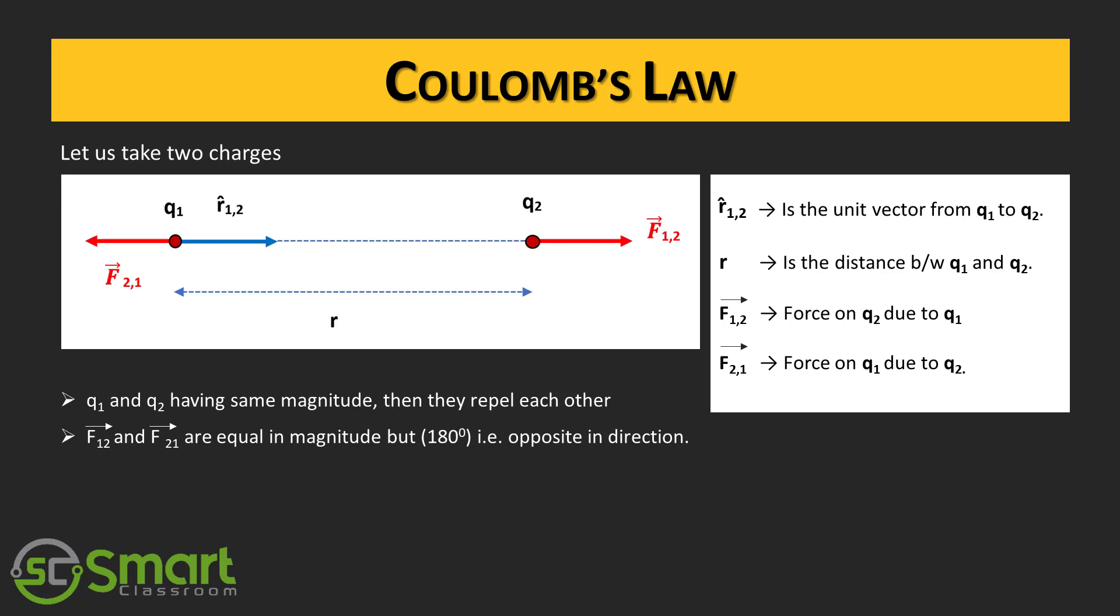Let us take two charges q1 and q2 having same magnitude, either both positive or negative, separated by a distance r. Then they repel each other. The force f12 is the force on q2 due to q1. The force f21 is the force on q1 due to q2. The force f12 and force f21 are equal in magnitude but opposite in direction. The unit vector r12 is the unit vector from q1 to q2.